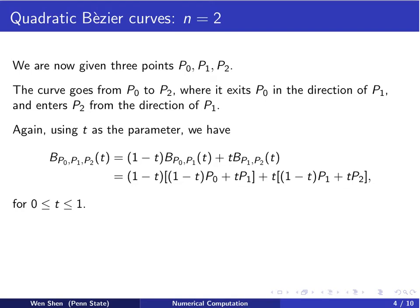Again, we can use t as the parameter for this curve, and the curve can be defined recursively similar to the linear Bézier curves. The notation B_{P0,P1,P2}(t) means it's a Bézier curve using P0, P1, P2 as control points in that order. It equals a convex combination of two Bézier curves at a lower level: a Bézier curve from P0 to P1, and a Bézier curve from P1 to P2. These are linear Bézier curves parameterized with the same parameter t.